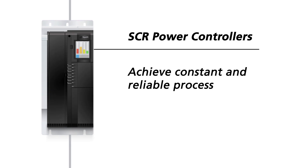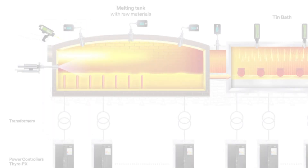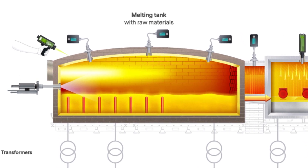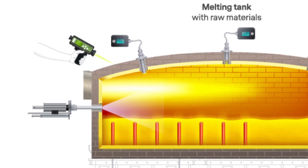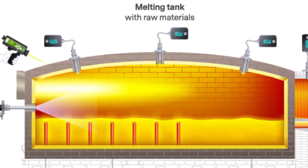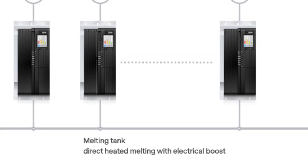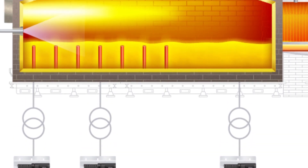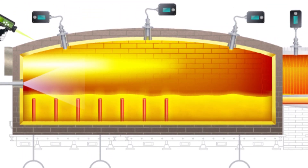The addition of power controllers also enables you to easily adjust process parameters and achieve a constant, more reliable process. For glass melting, it is important to monitor and control the melting tank, including the temperatures along the roof, end wall, tank bottom, and surface of the molten glass. It is also important to precisely regulate the power, current, and voltage along the melting process.